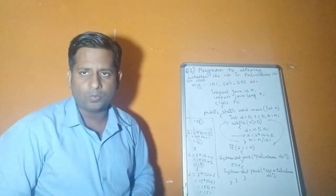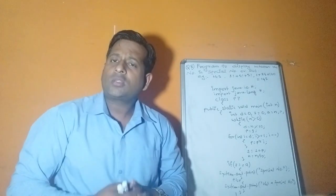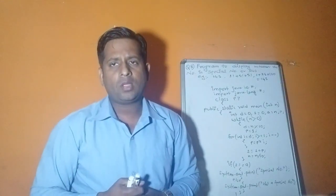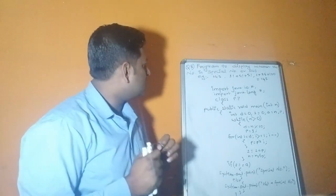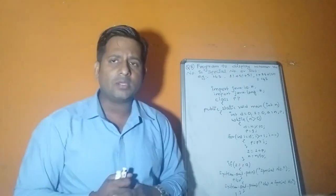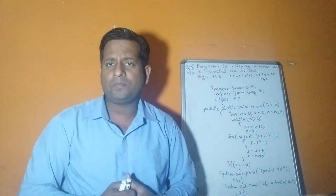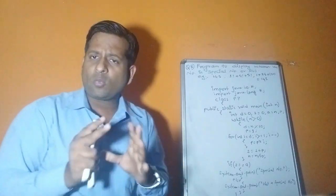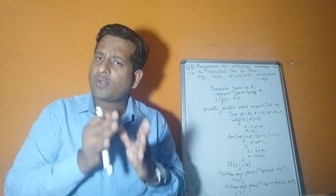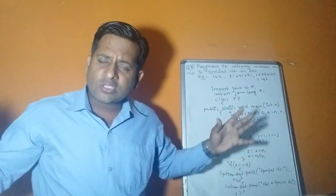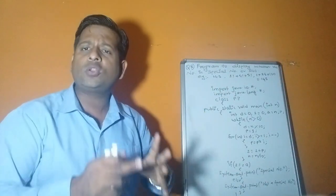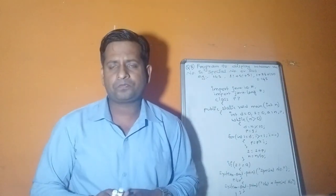This is the second type of while loop question — while with if-else. Now the third type adds a nested for loop inside while. Question: program to display whether a number is a special number or not. A special number is one where the sum of the factorials of its digits equals the original number. For example, 145: 1! + 4! + 5! = 1 + 24 + 120 = 145.